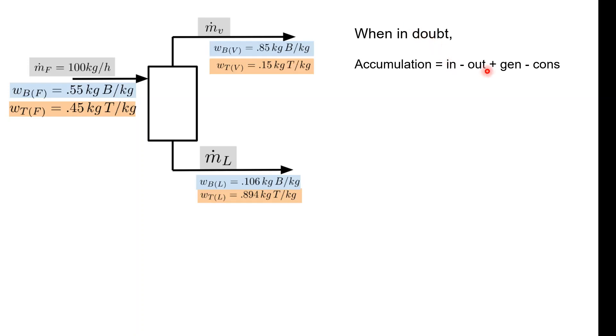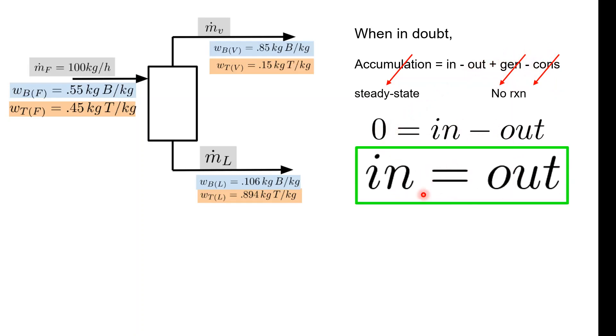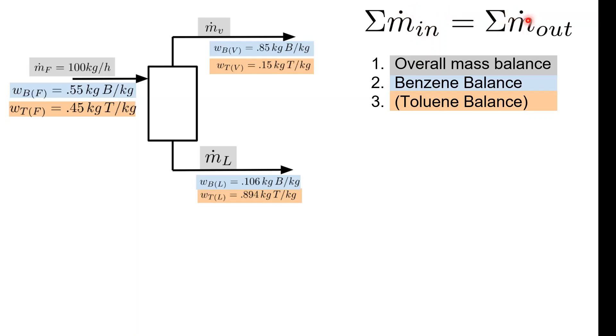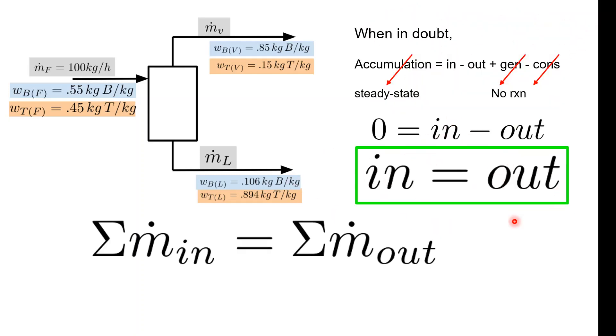Now it's time for the mass balance. When in doubt, accumulation equals in minus out. We can make some assumptions: we're gonna assume steady state - this is steady state operation because they didn't give us any inclination to believe otherwise - and we're gonna assume that there's no reaction. So we're just gonna say that zero equals in minus out, or that in equals out. This is really the summation of all the feed flow rates going into the system is equal to the summation of all the feed flow rates leaving the system. You're adding up everything that's going in, you're adding up everything that's going out.